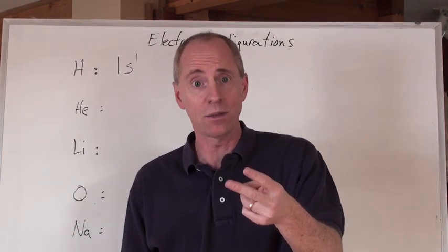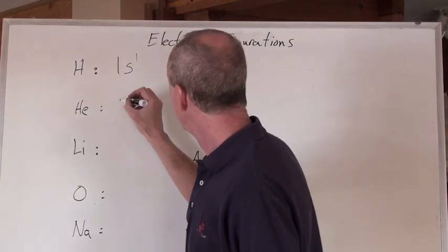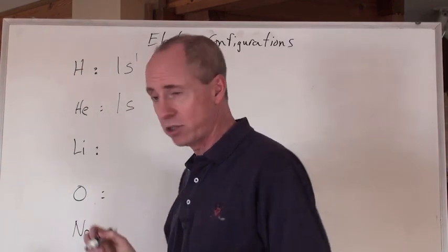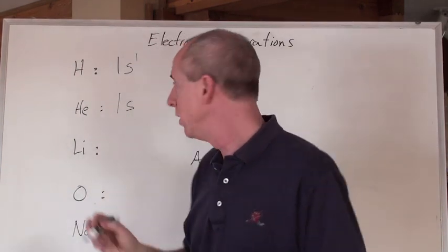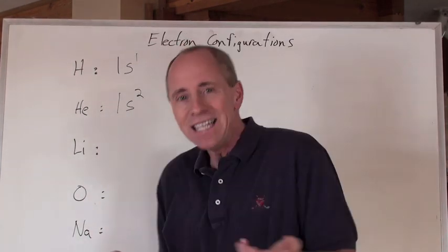So what's helium? Because helium is element number 2. So it's going to be 1s. And how many electrons can you have in that s orbital? 2. 1s2. Easy.